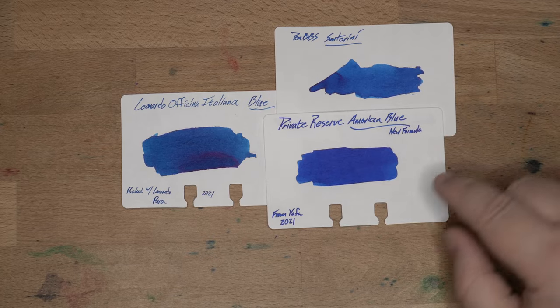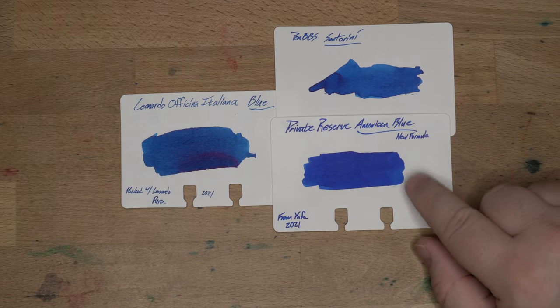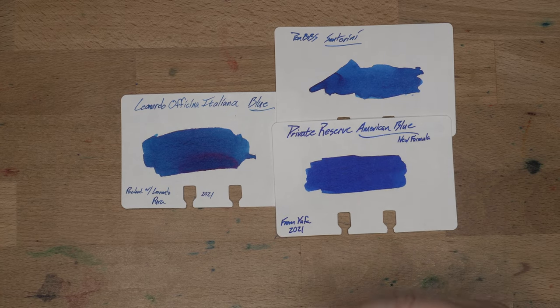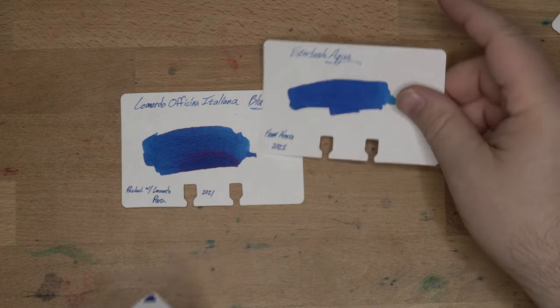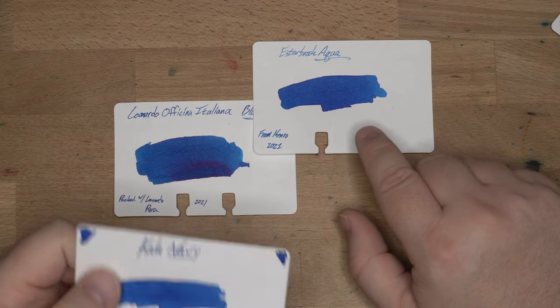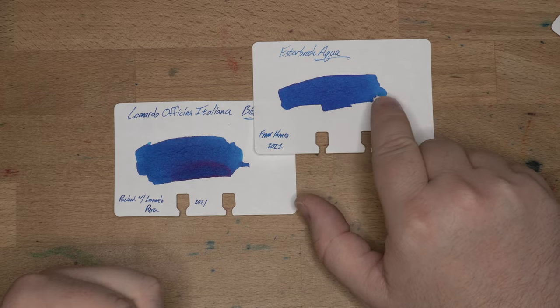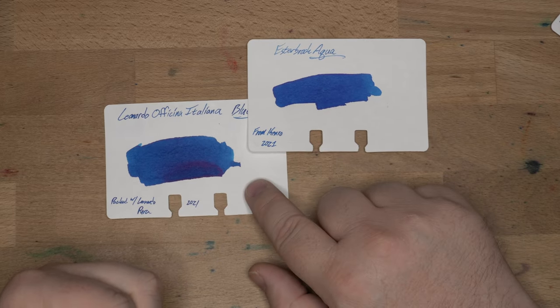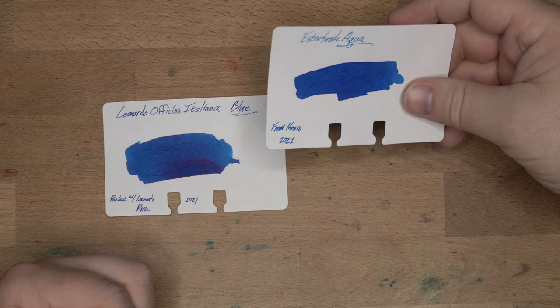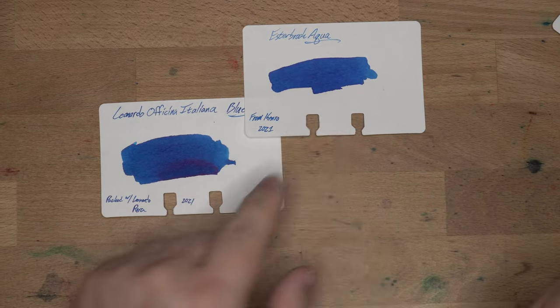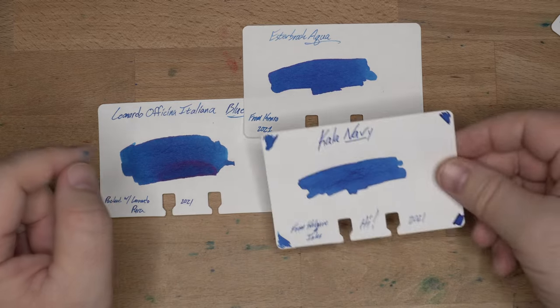Private Reserve American Blue. This is the new current formula. Another very wet blue. If you're looking for a really nice looking but wet blue, that's another one of those. Then we've got Esterbrook Aqua. I love Esterbrook Aqua. I think this is a great ink. A little bit lighter again than the Leonardo. And you don't really get the sheen that you'll get from a Leonardo in that Esterbrook Aqua. But you can get this one with Shimmer, which is kind of cool.